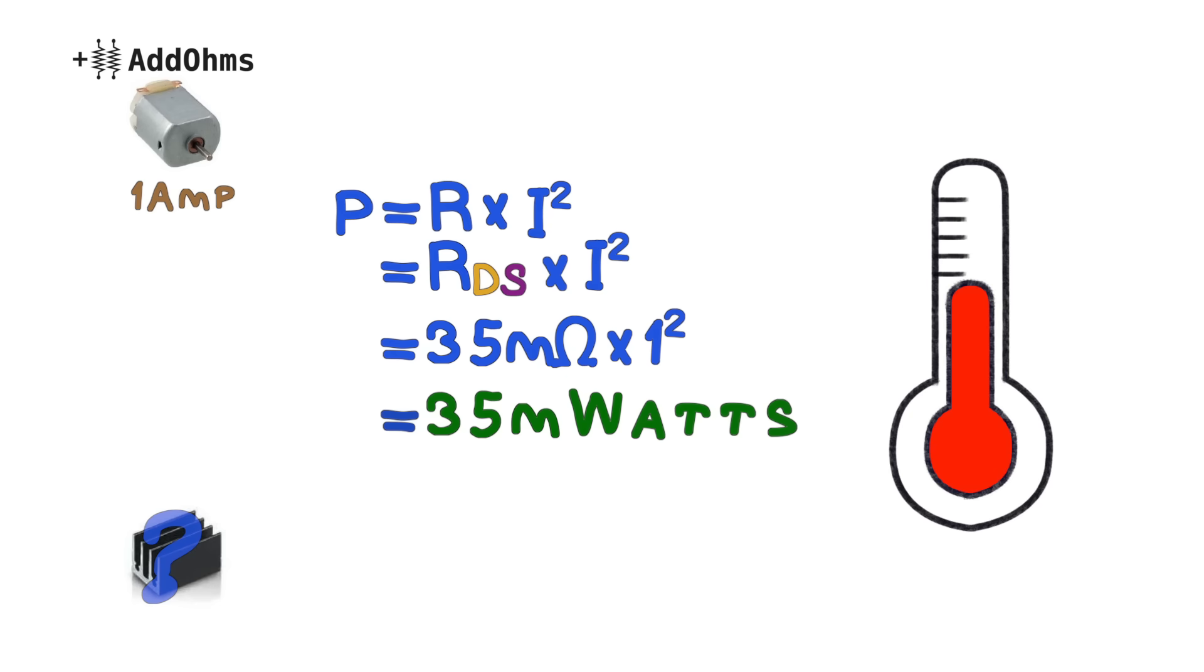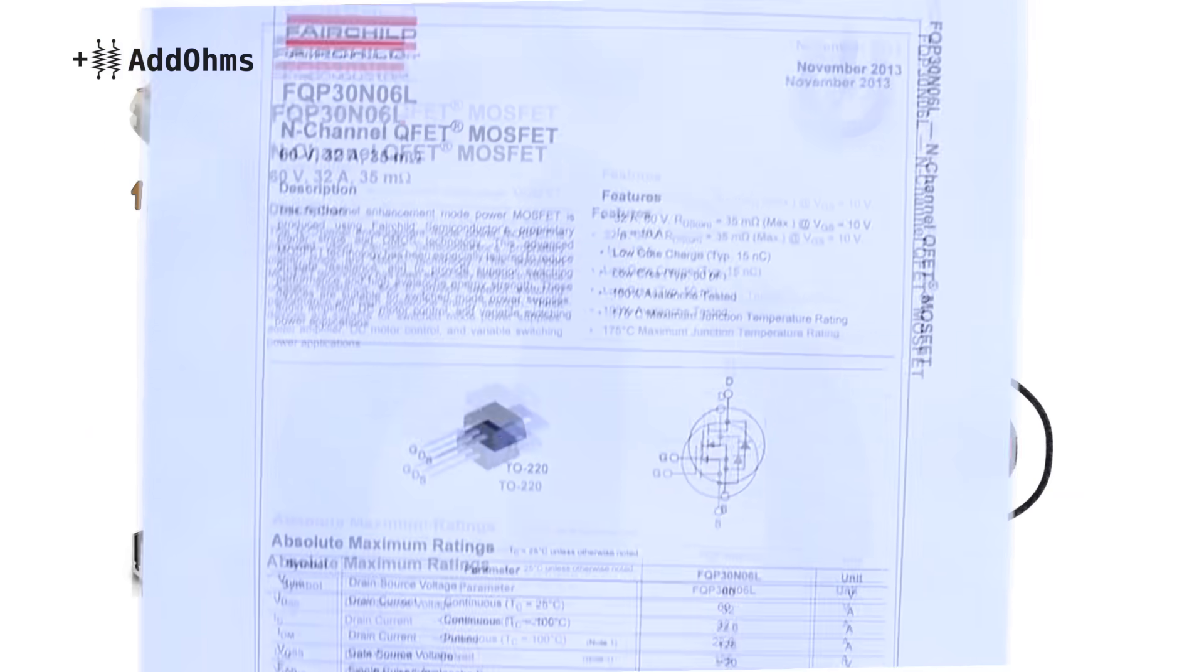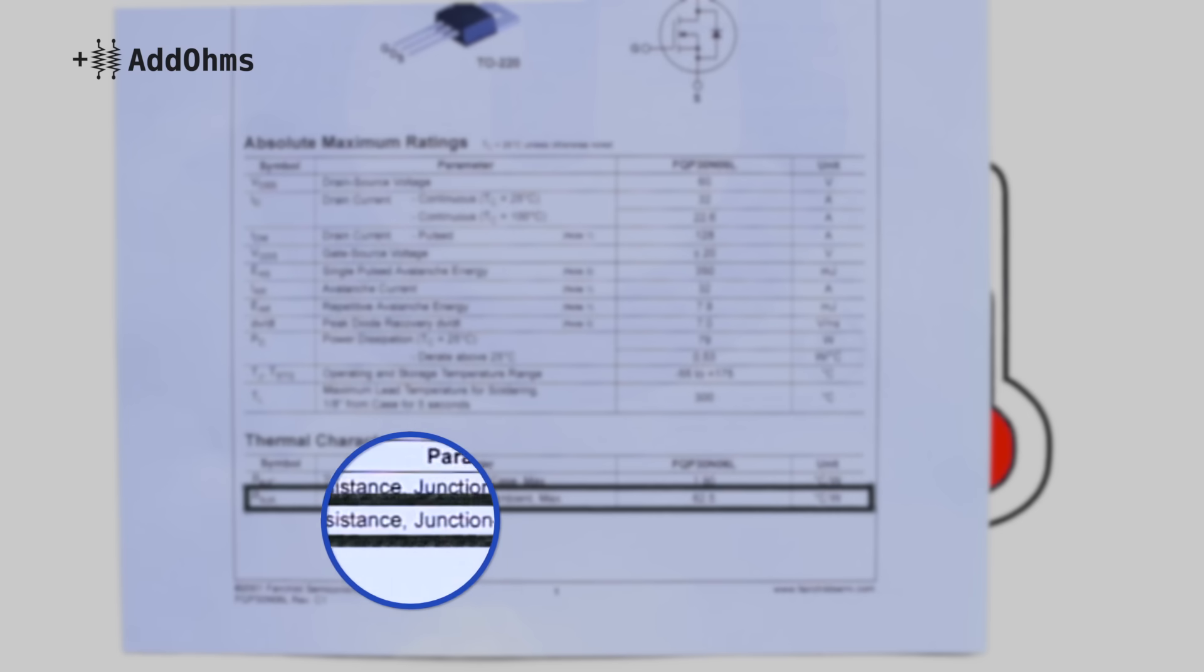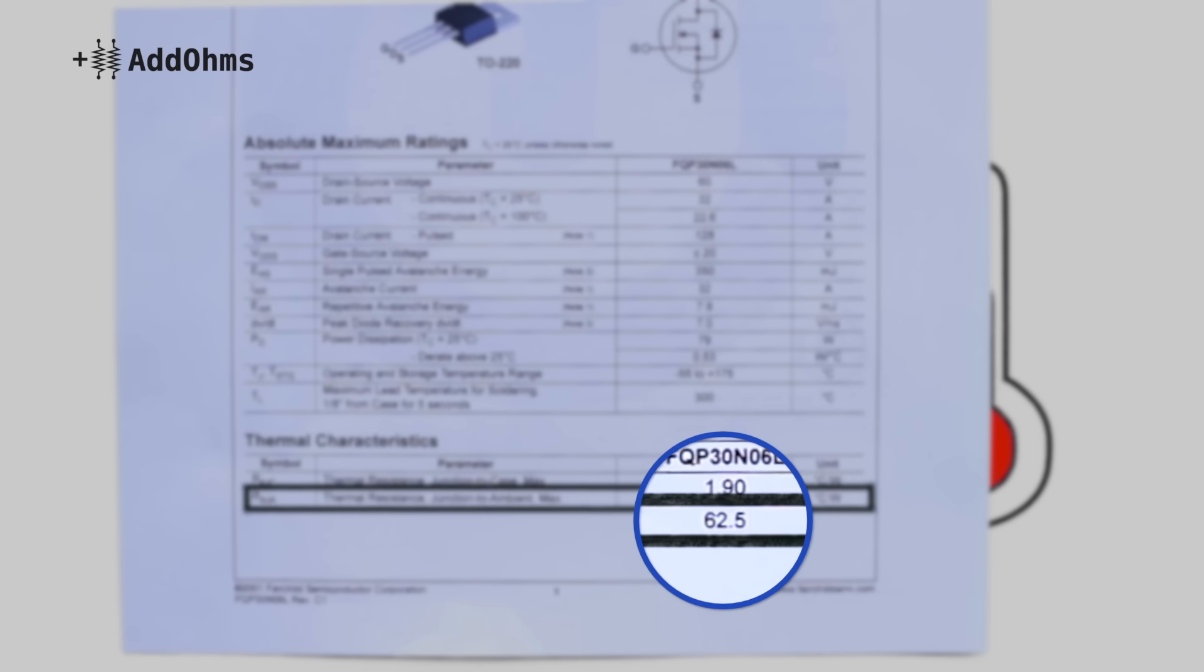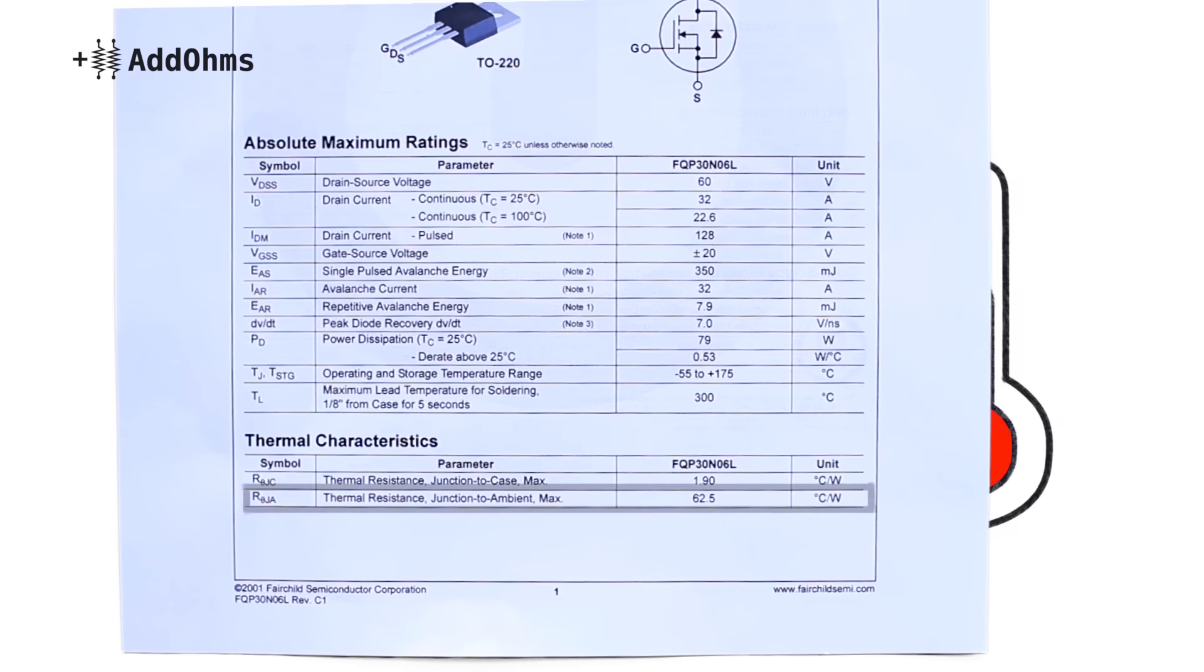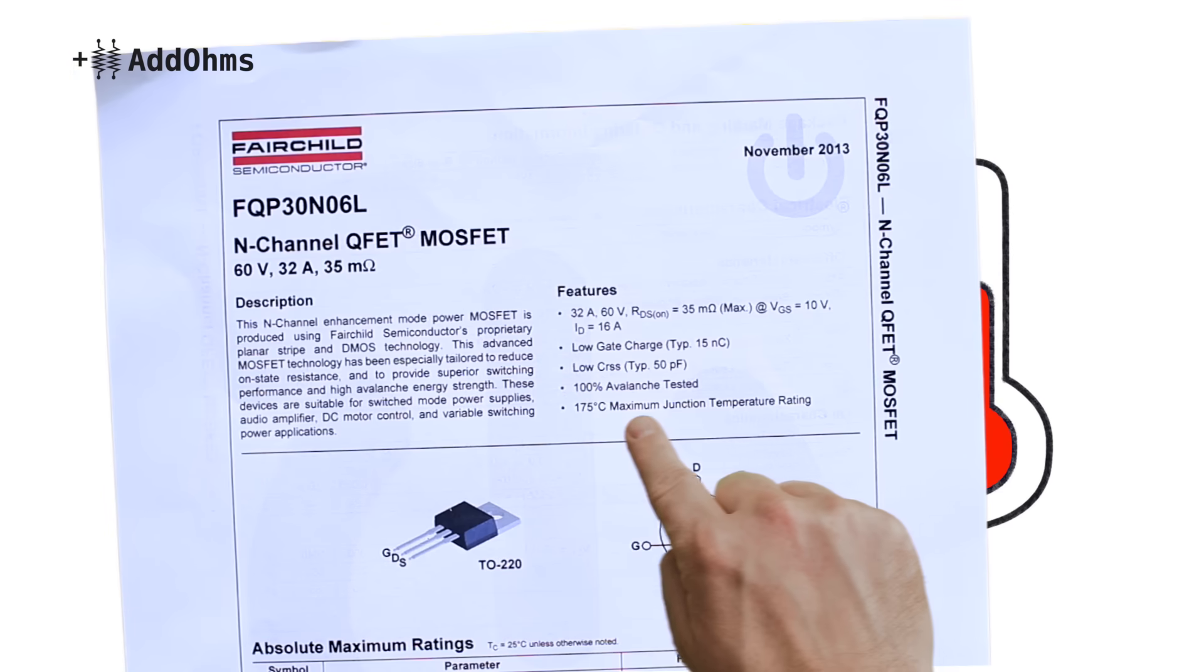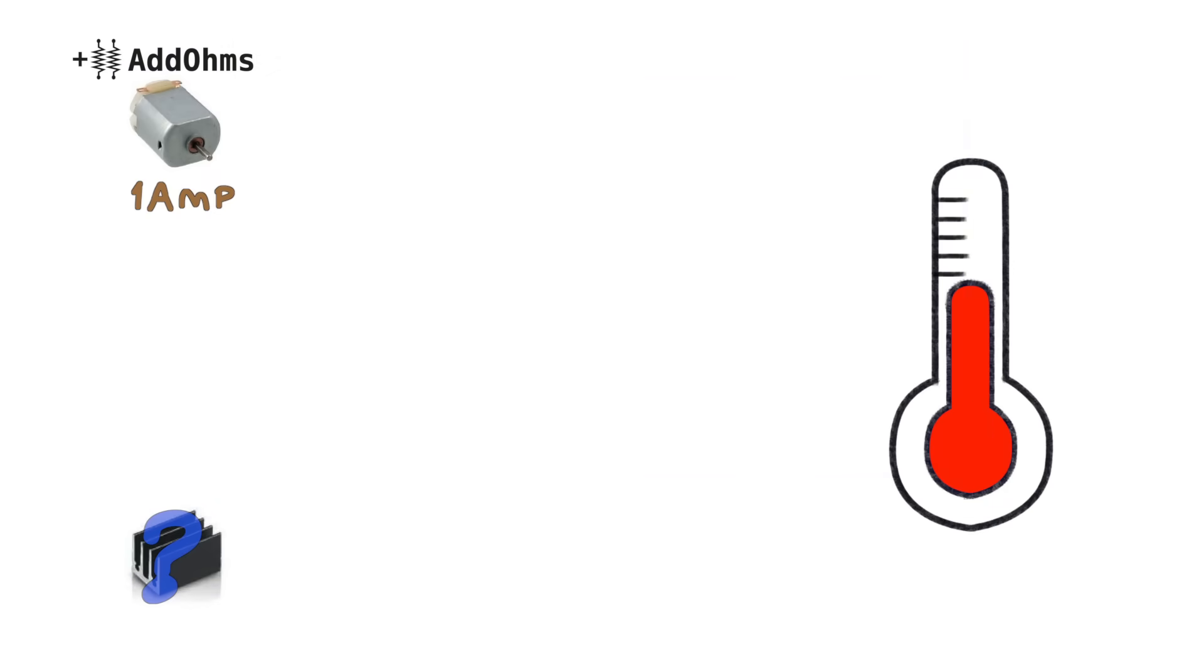Okay, now we need a few more things from the datasheet. First, we need the junction to ambient coefficient, which is RθJA, and in this case is 62.5 degrees C per watt. We also need the maximum junction temperature, which in this case is 175 degrees C.